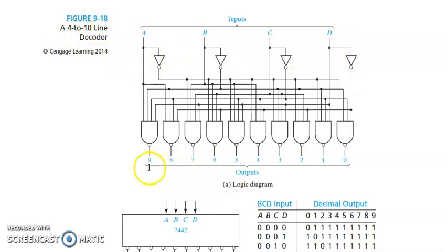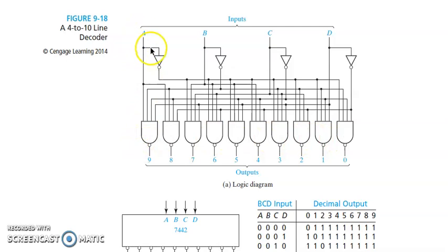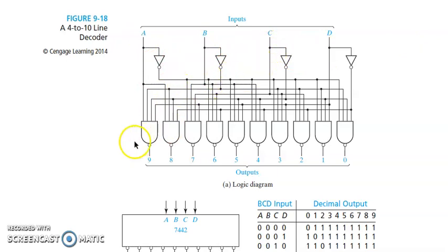There are 4 inputs A, B, C, D and 10 outputs 0 to 9. If the input is 1001, that is 9, so that output will be high. This has been implemented with basic gates — the internal contents are now visible, unlike the earlier block diagram. For output 9: A and D are directly connected (both high), while the complementary outputs of B and C are connected.